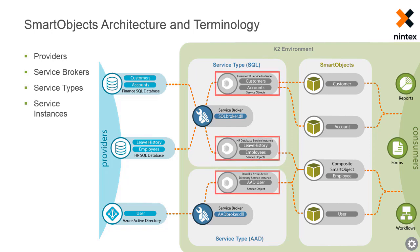A service instance is an instance of a service type with configuration values. The configuration values are usually broker-specific and include things like server name, database name, or web service URL. The configuration also includes the authentication mode to use — for example, you could use static credentials, maybe the K2 service account, or OAuth. Registering a service instance discovers the entities in the target data store. If something changes in the data store, say a new table is added to the Finance database, you have to refresh the service instance to discover those changes.